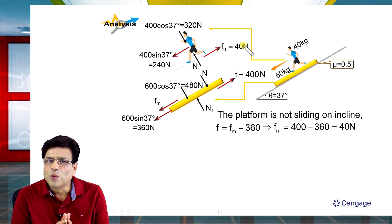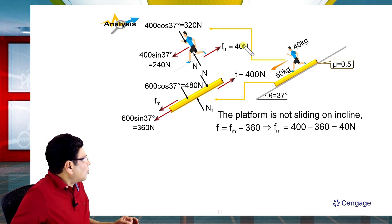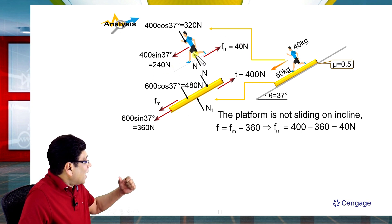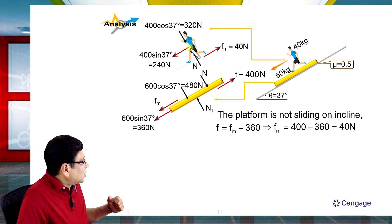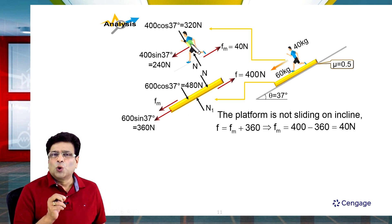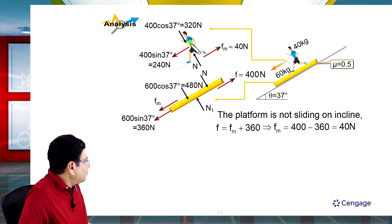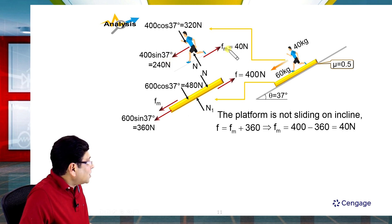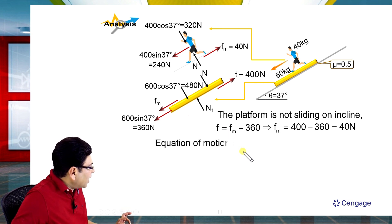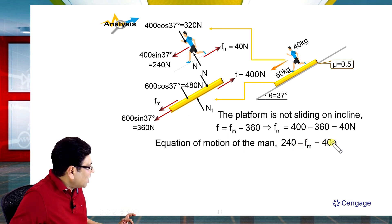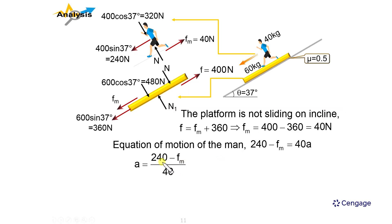Writing the equation of motion for the man parallel to the inclined plane, with the man running down: 240 - fm = mass × acceleration. Rearranging: a = (240 - fm) / 40. Substituting fm = 40 N: a = (240 - 40) / 40 = 200 / 40 = 5 meters per second squared.